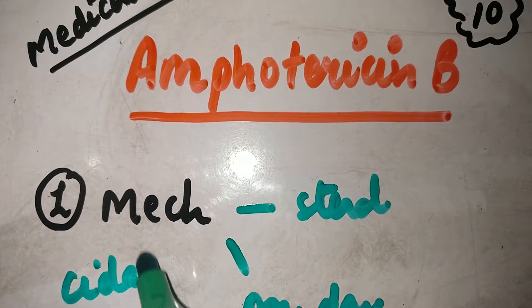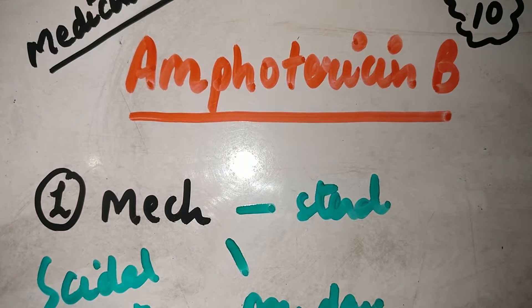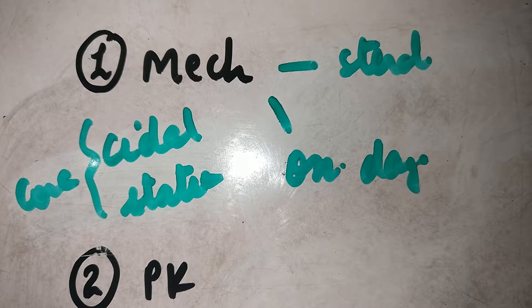It can be used as a cidal drug or as a static drug depending on what concentration of Amphotericin B is being used. So static or cidal depending on its concentration.